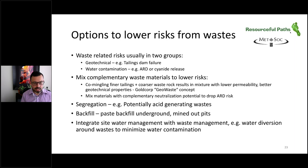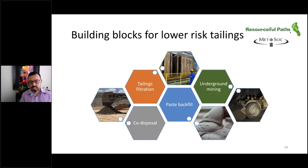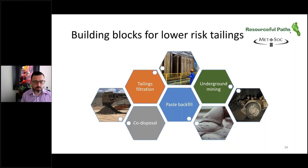Segregation may be used to store material with potential acid generation more safely in a particular repository. We can use backfill, and it's important that we integrate site water management with waste management — in particular, water diversion and minimising the amount of water that contacts waste to minimise water contamination. So we can see these are building blocks to produce a lower risk mine: underground mining, tailings filtration, paste backfill, co-disposal — these things can fit together to produce a mine with much lower risk with respect to tailings and lower footprint.